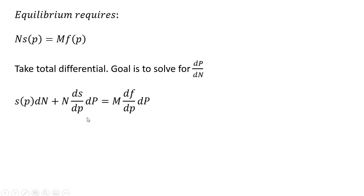And now, we're going to take the total differential of the right-hand side. I'm not going to worry about M. We're going to hold M constant, so there is no change in M. dM goes to zero. So, ignoring that, it's going to be M times df/dp times dp.